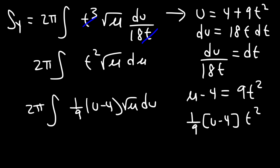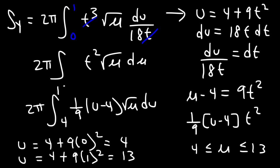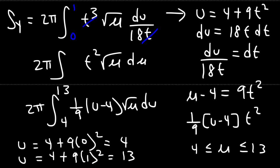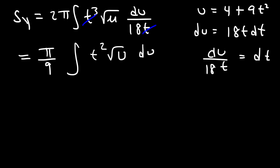Now we need to change the limits. When t is 0, u is going to be 4 plus 9 times 0 squared, so that's 4. When t is 1, it's 4 plus 9 times 1 squared, which is 9 plus 4 equals 13. So we need to integrate from 4 to 13. Note: due to some video editing, the 9 on the denominator was missed earlier, so 2π over 18 reduces to π over 9.